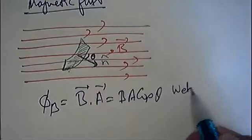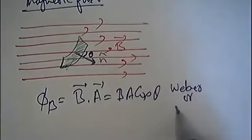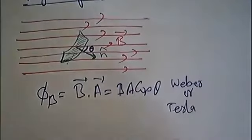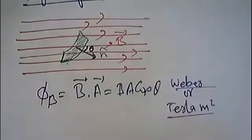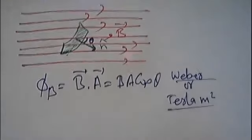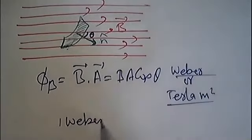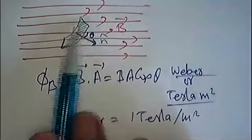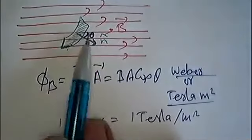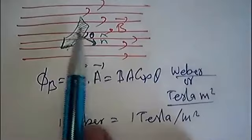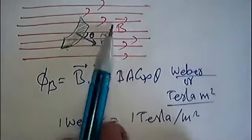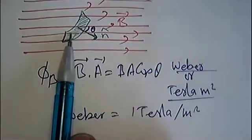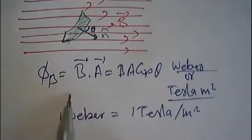The unit of magnetic flux is the weber. One weber is equal to one tesla per square meter — that is, one square meter of area and one tesla magnetic field strength. So we say that the magnetic flux linked with this area is one weber. When one square meter of area has a theta of zero — meaning one tesla strength of magnetic field — then we say the magnetic flux of this area is one weber.